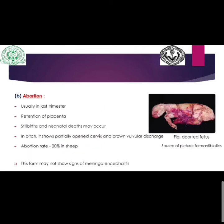Abortion usually occurs in the last trimester and there may be retention of placenta. Generally the fetus dies in the uterus, but stillbirth or neonatal deaths may occur. Clinical signs include partially open cervix and brown vulvar discharge. The abortion rate in sheep is about 20%. Animals showing the abortion form may not show signs of meningoencephalitis.